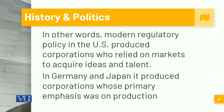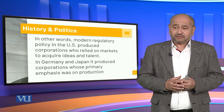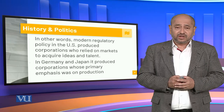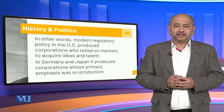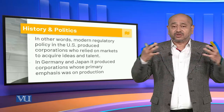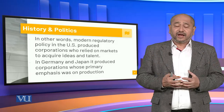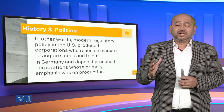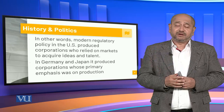Modern regulatory policy in the US produced corporations that relied on markets to acquire ideas and talent, while in Germany and Japan it produced corporations whose primary emphasis was on production. Production efficiency emerged in Europe and Japan, while in America it was all about market acquisition. In the long run, the European and Japanese model gained supremacy over the American model.